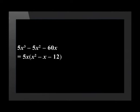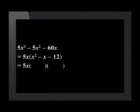Using step two, we see that there is a trinomial in the brackets. We must continue to write the highest common factor on every line. The factors of negative 12 are negative 4 and positive 3, giving us 5x(x - 4)(x + 3).